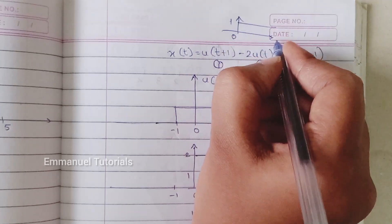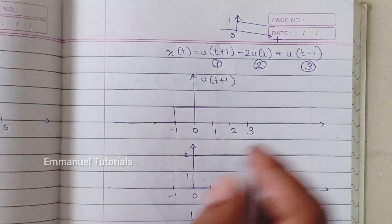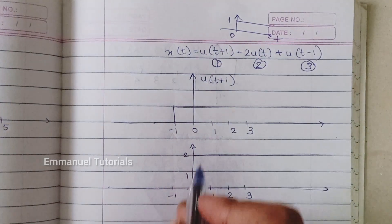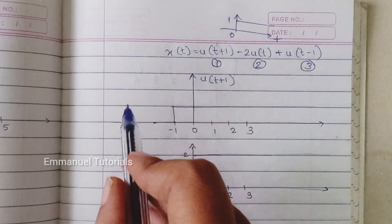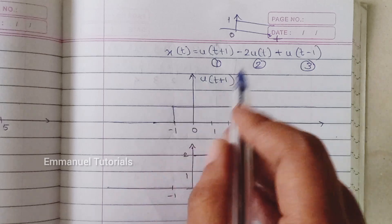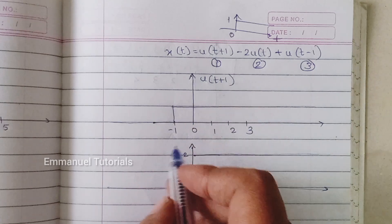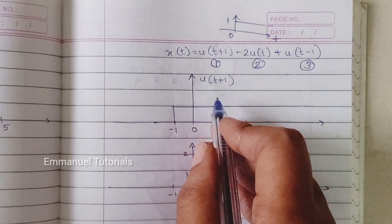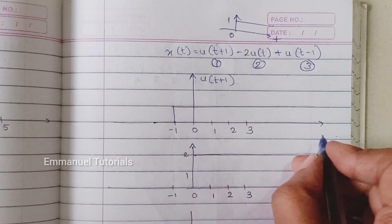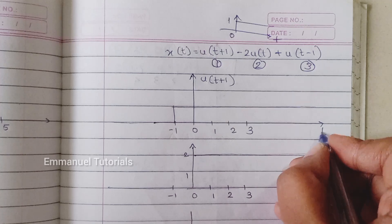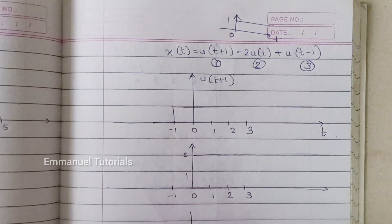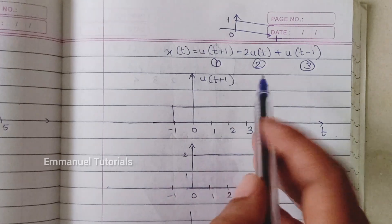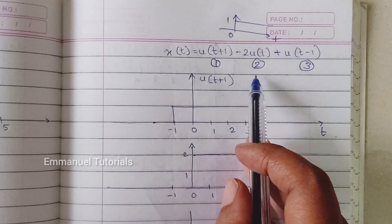When you shift it to the left by one — because it's advanced — it's going to start from minus one. That is what I have drawn here. This is u(t+1), and what we are going to do is subtract the second part.